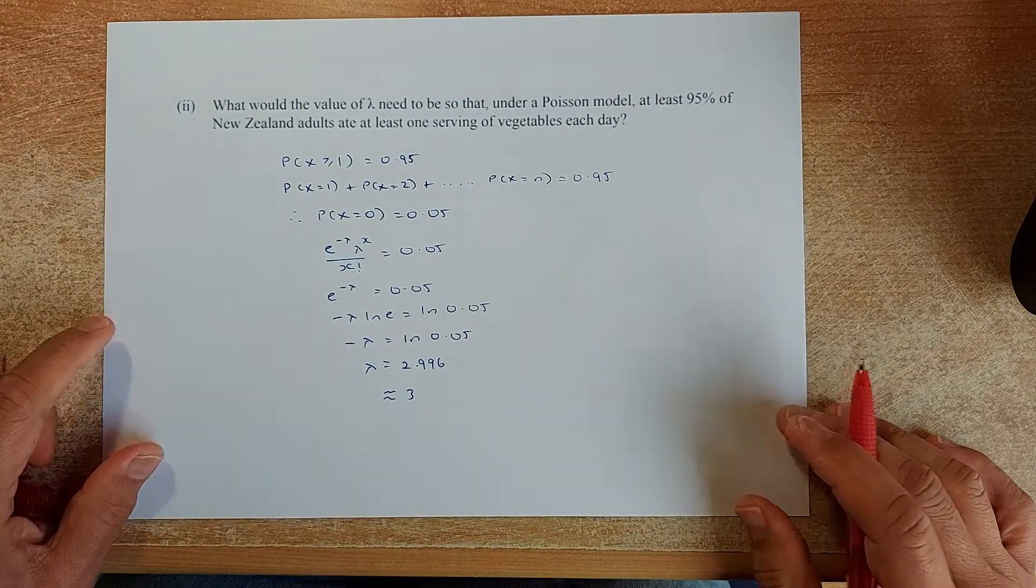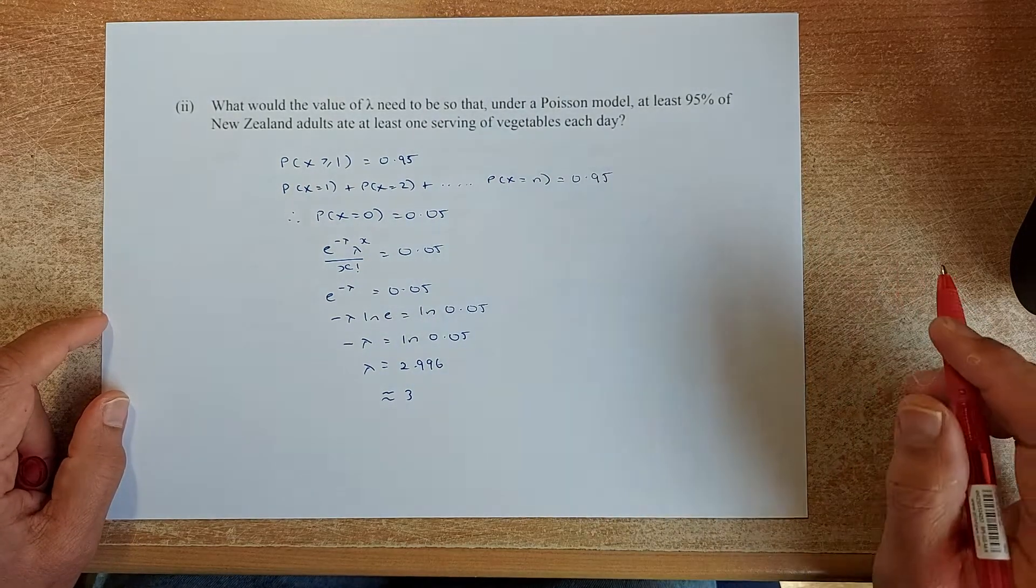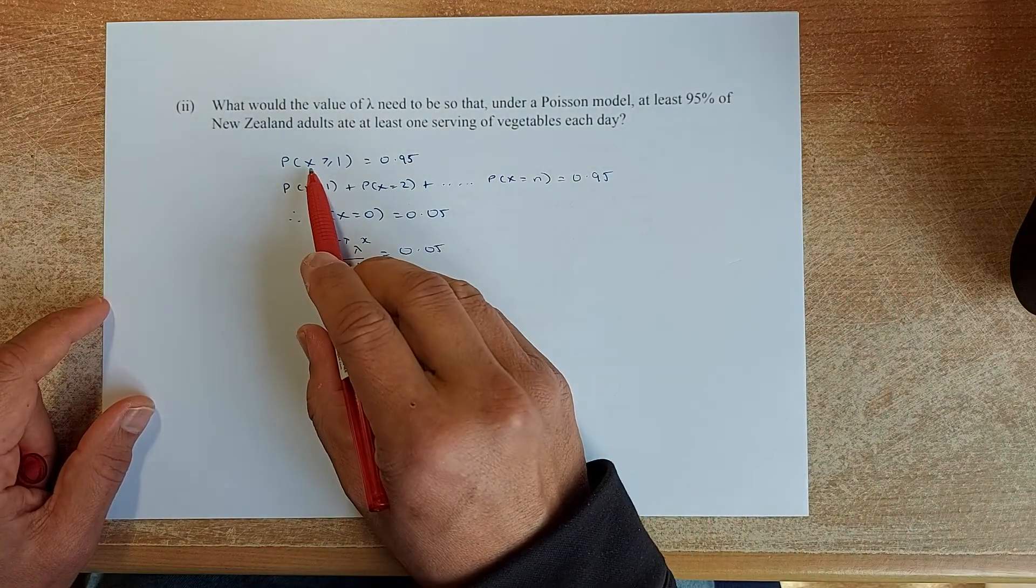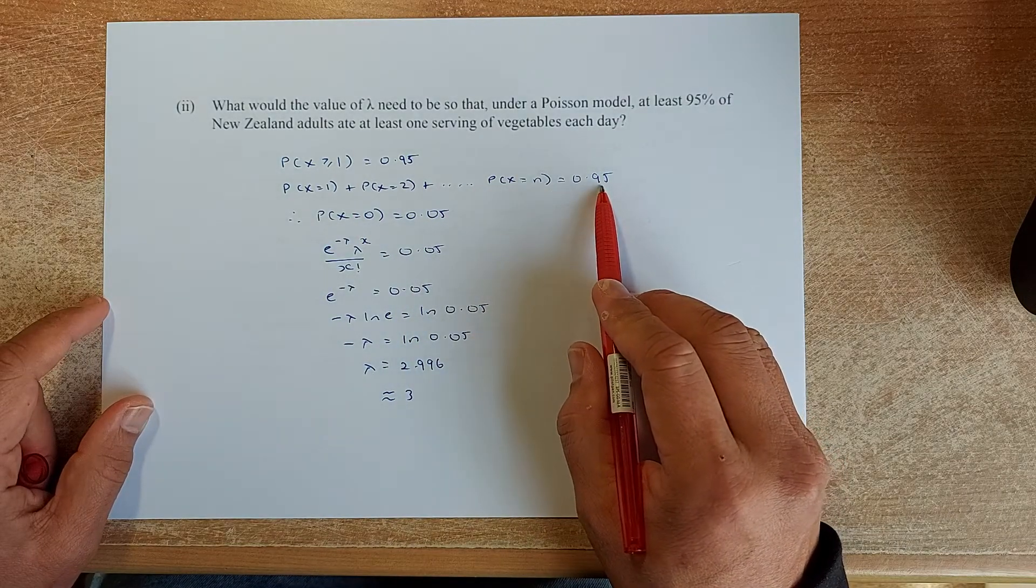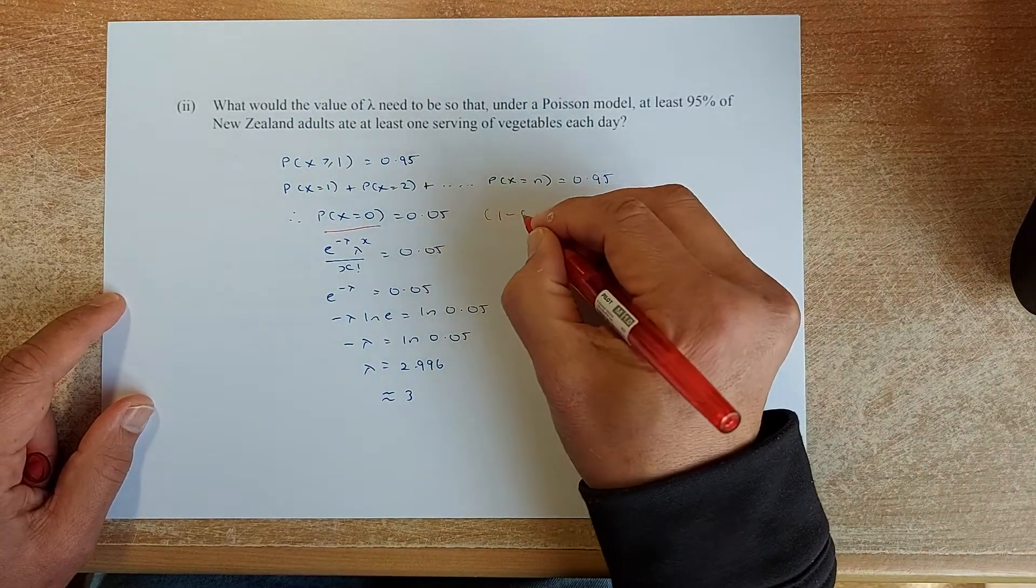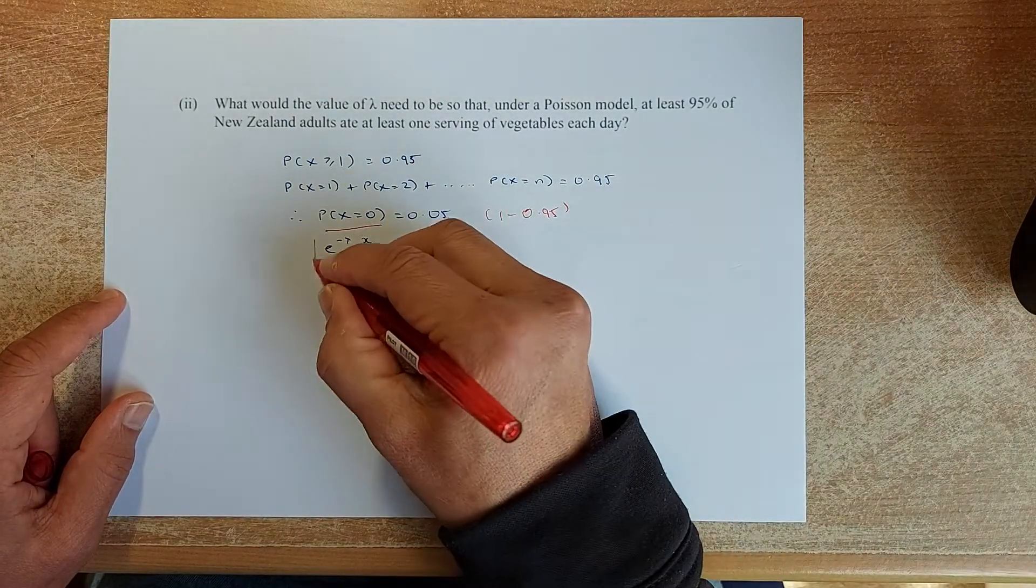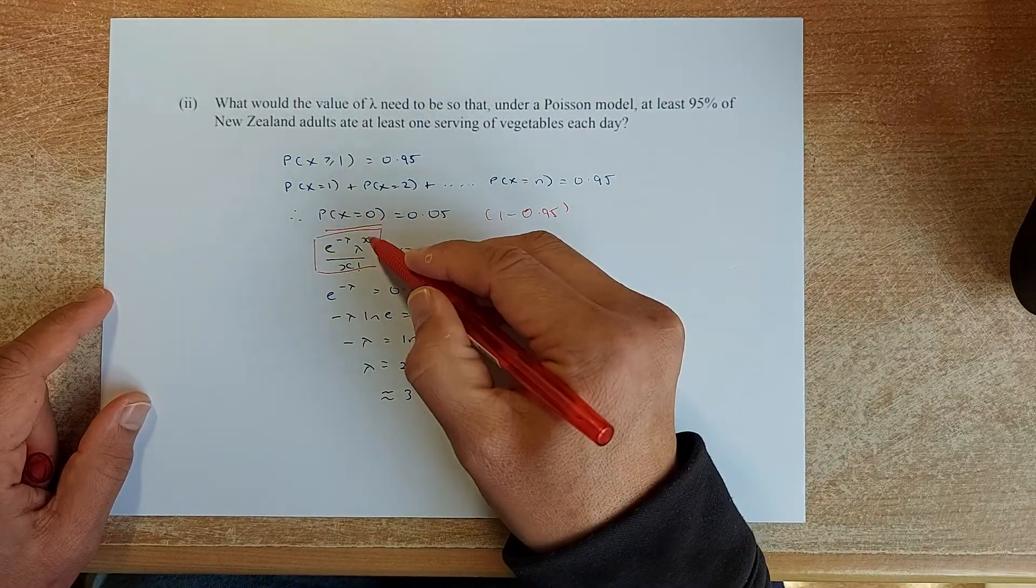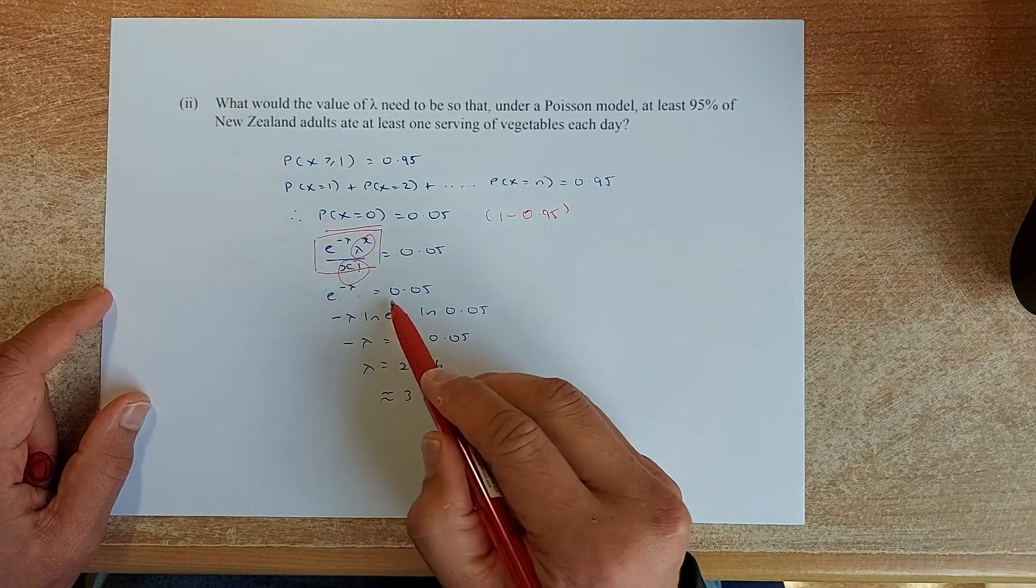This is the inverse Poisson. What value of lambda is needed so that at least 95% of New Zealand eat at least 1 serving of vegetable each day? So you are looking for at least 1. So it could be 1, 2, 3 and so forth. And the answer is 0.95. So you know that probability of x equal to 0 is going to be 0.05 because it's 1 minus 0.95. That will give you 0.05. So the formula for Poisson is this. E minus lambda, lambda to the x over x factorial is 0.05. If your x is 0, this equals to 1. This is also equal to 1. So you are going to solve E minus lambda equal to 0.05.